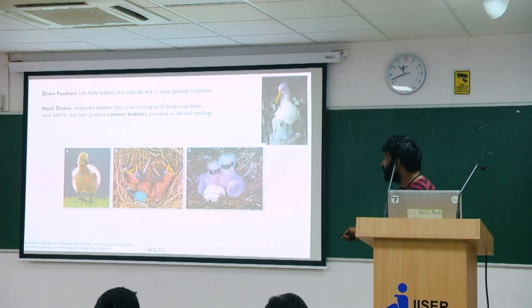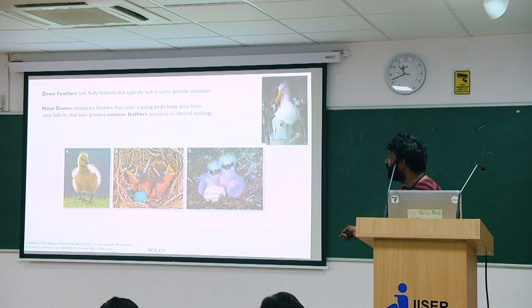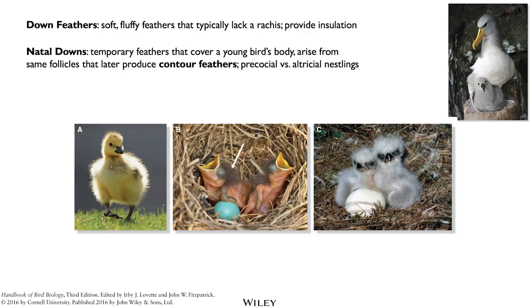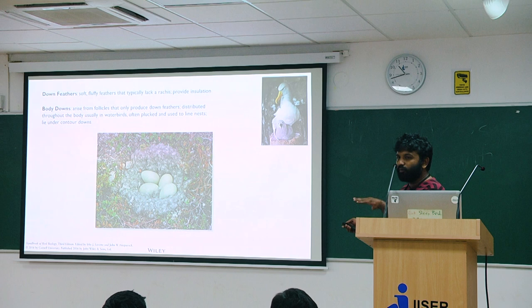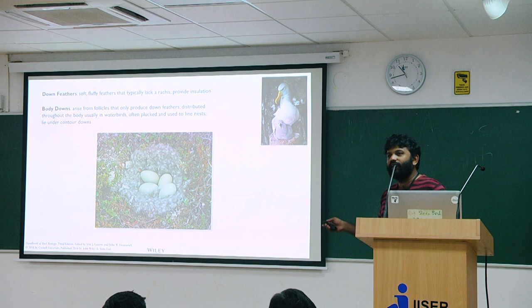In down feathers you have natal down, which is what is there in the young albatross. Different groups of birds have different amounts of down feathers — some groups have babies covered with down feathers, some only in small parts. These down feathers, in the same places where they occur, are eventually replaced by contour feathers. Those follicles that only produce down feathers — from beginning to end — are usually across the lower body, upper body, anywhere other than the wings, tail, and certain other parts.